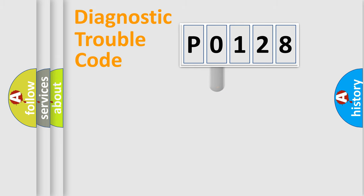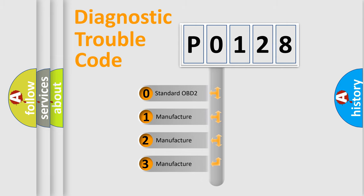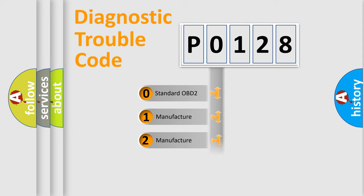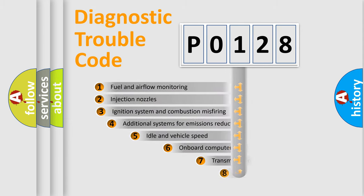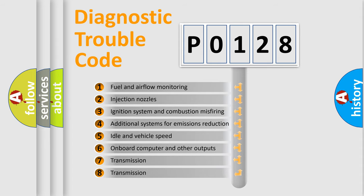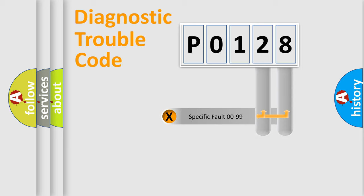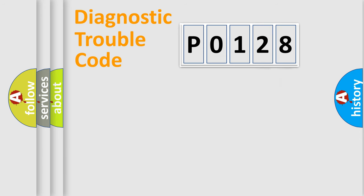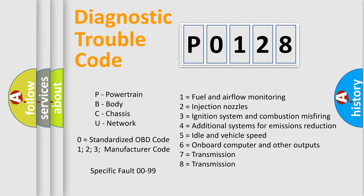This distribution is defined in the first character of the code. If the second character is expressed as 0, it is a standardized error. In the case of numbers 1, 2, or 3, it is a more manufacturer-specific error expression. The third character specifies a subset of errors. This division is valid only for the standardized DTC code, and only the last two characters define the specific fault of the group.